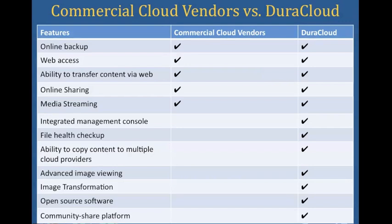Some of the reasons you might choose to use DuraCloud as opposed to going directly to a single cloud vendor include the opportunity to take advantage of multiple cloud vendors through one integrated management console, the ability to do health checks on your files which you can't do easily from Amazon or Rackspace directly, and the ability to copy and keep content synchronized across multiple cloud providers along with access to services such as image viewing and image transformation. All the software is open source and it's a community-shared platform, meaning any organization can download and use it without having to use the managed service if they choose.